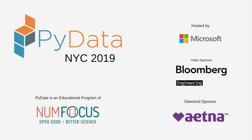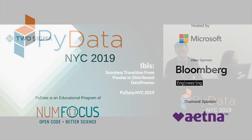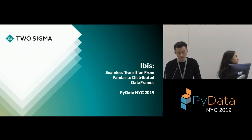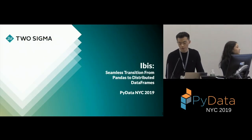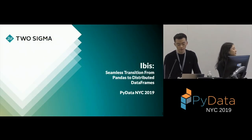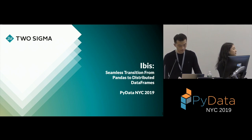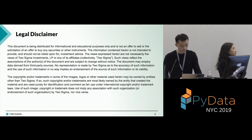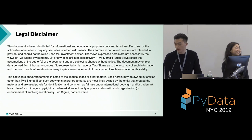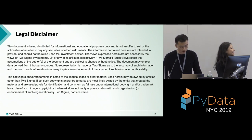Hi, everyone. Very glad to be here today. Today we are going to talk about IBIS, which is a pretty good Python library that can help you to transition from single node pandas code to distributed data frames. Very important, this legal disclaimer, basically saying we're not giving financial advice. And that should be pretty obvious.